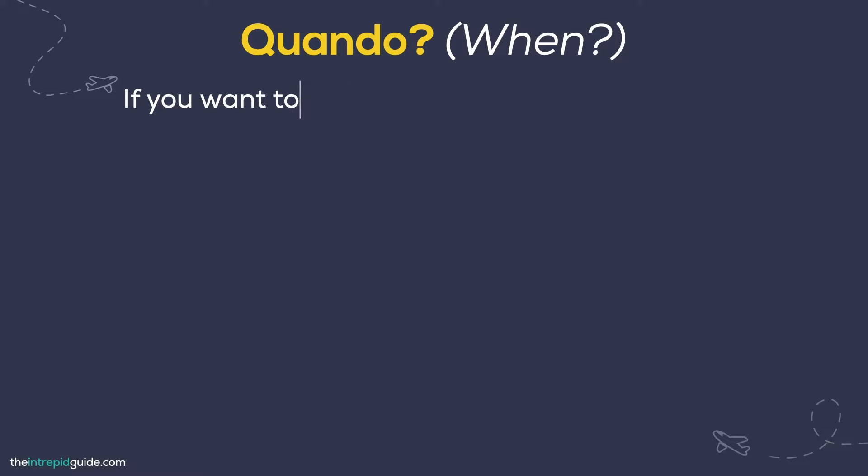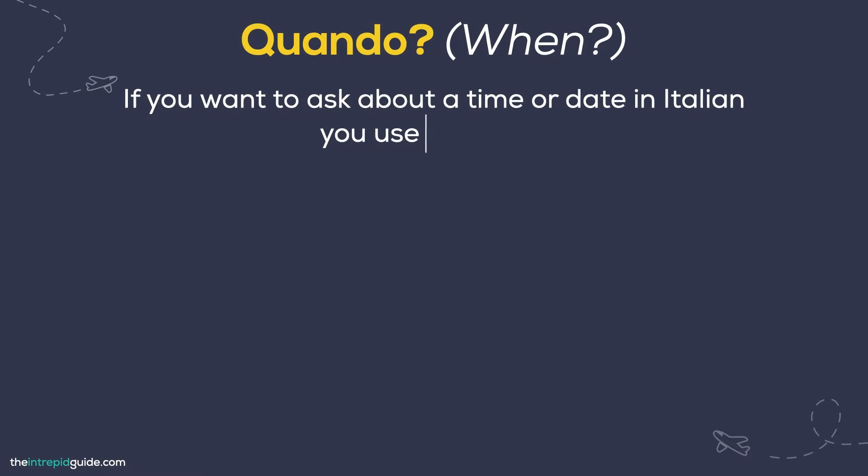Dimmi quando, quando, quando? Does this popular Italian song ring any bells? Well, if you want to ask about a time or date in Italian, you use quando, meaning when. Make sure you stress the D sound, which is voiced, as opposed to the T sound which is unvoiced, as this could change the meaning completely. We'll learn more about quanto later in this lesson.